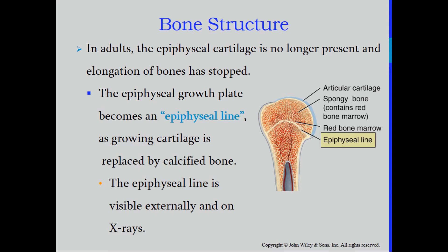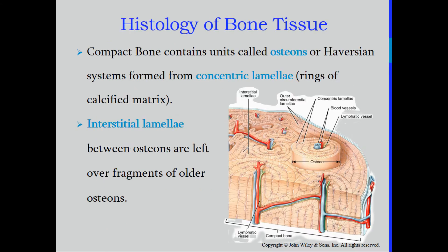As growing cartilage is replaced by calcified bone, the epiphyseal line forms. On an adult x-ray, this line is closed, which is a clear indication that the person is no longer growing. The epiphyseal line is visible both externally and on x-rays. Compact bone contains units called osteons, sometimes referred to as the Haversian system, formed by concentric lamellae — rings of calcified matrix.